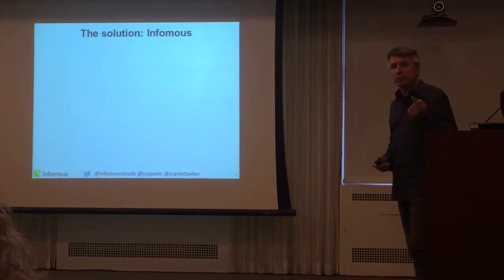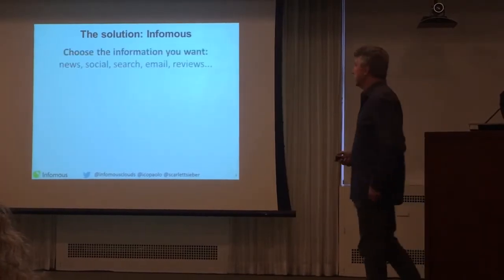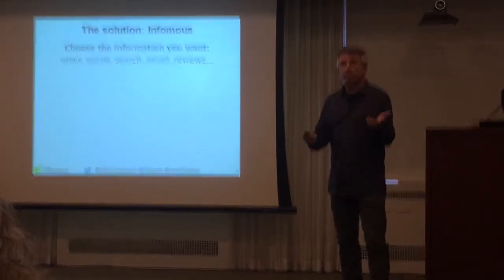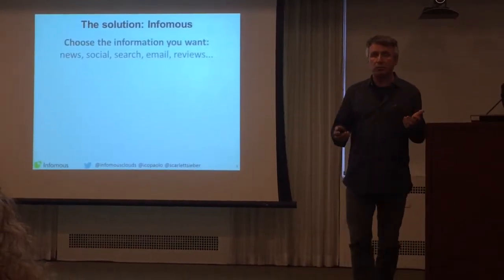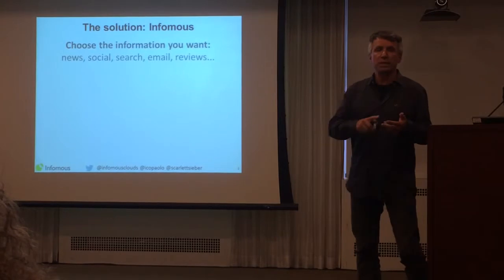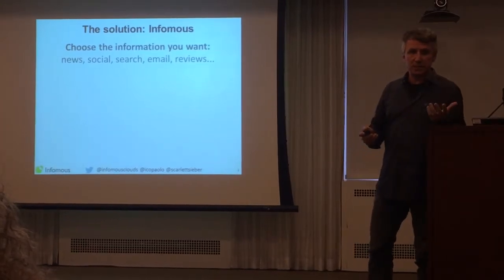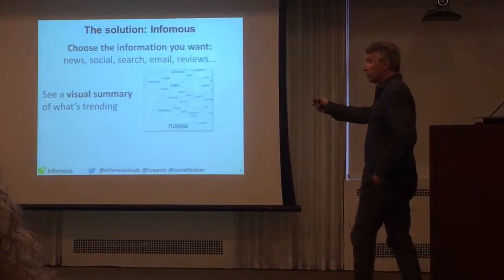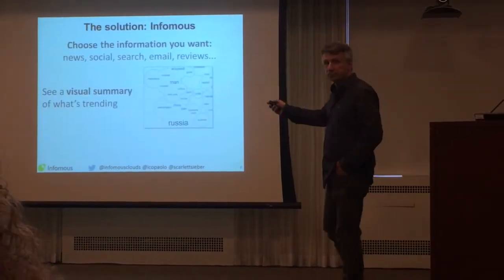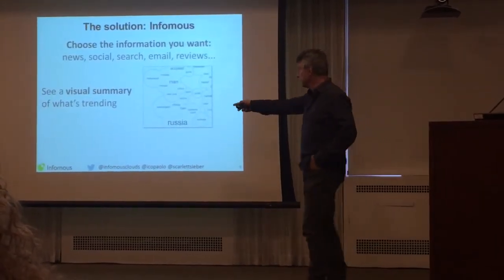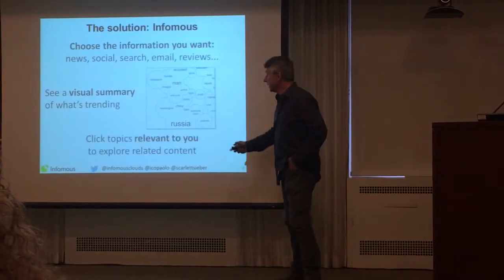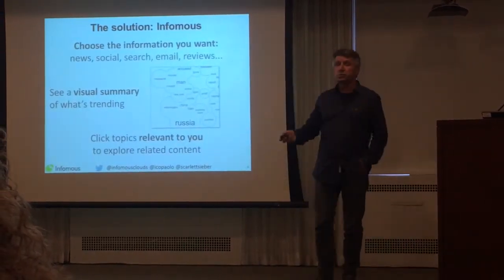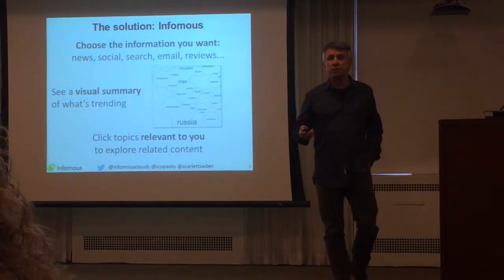The solution we've come up with is called Infamous. The way it works is the following: you choose information that you care about — whether it's news, social media, anything that is text-based — and then we show you a visual summary of what is trending with some of the main topics highlighted, and then you click topics that are relevant to you to explore related content.